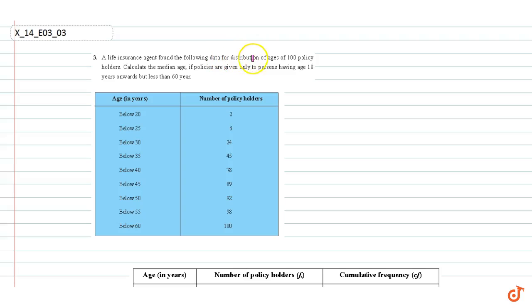In this question, we are given data for the distribution of ages of 100 policy holders. We have to calculate the median age. This is the table given, which shows the cumulative frequency distribution of the data.